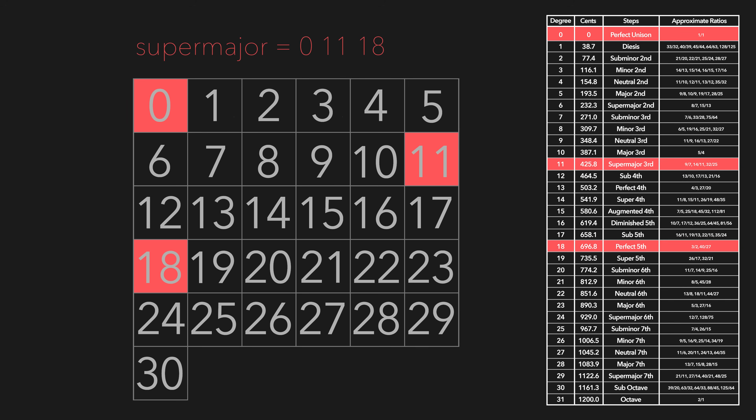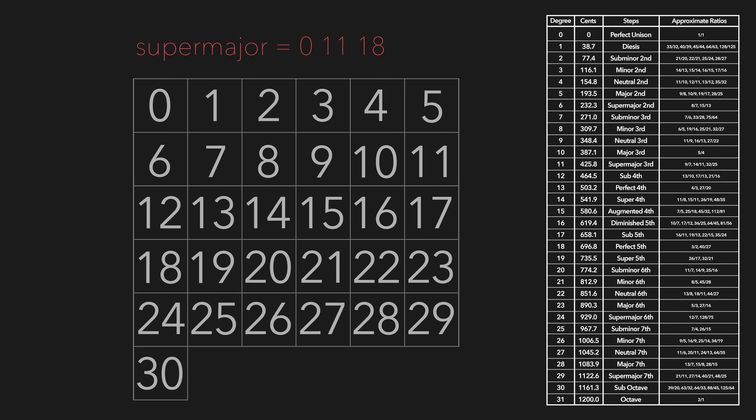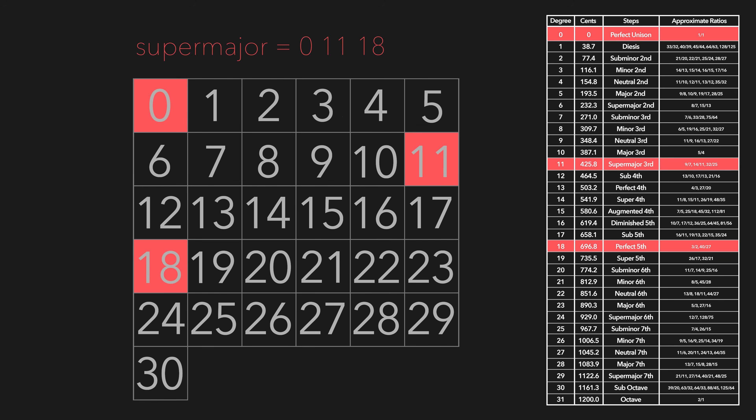Let me show you how to use EDO step to notate a chord. If I were to say the supermajor chord in 31 was EDO stepped as 0, 11, 18 — this means you take your EDO box or 31 interval chart, select 0 as your root, go up 11 steps for your supermajor 3rd interval, and finally go up 18 steps from your root to get your 5th.